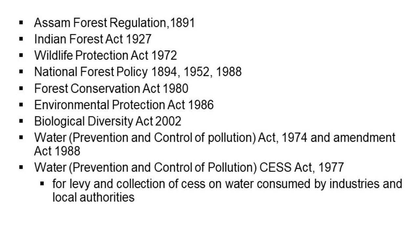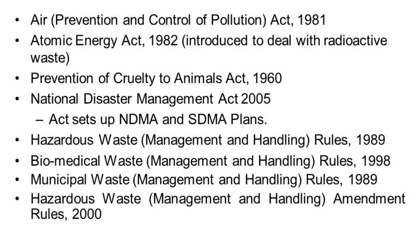These are some regulations or acts that have been implemented for the benefit of the environment, forest, and wildlife. You can see the year of enactment, and also the National Forest Policy at 1894, 1952, and 1988, and also the prevention and control of pollution — Control of Pollution Act 1981. You can check the year of enactment on all these acts; these are some environmental legislation.